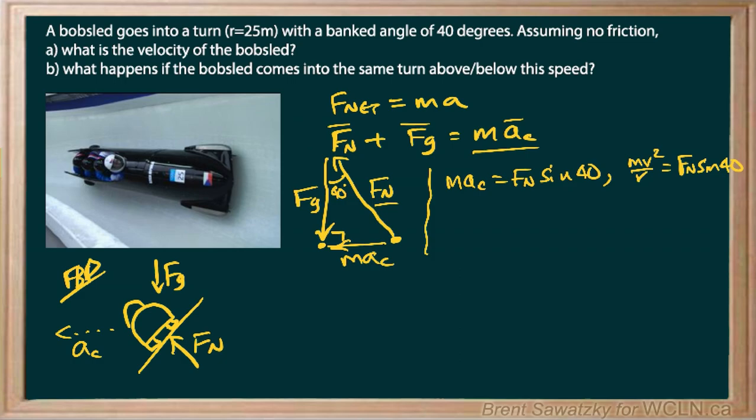And in very similar fashion, we can say fg. And this time it's the adjacent side. So we can say that's fn cos 40. And again, we can replace the fg with mg and say fn cos 40.